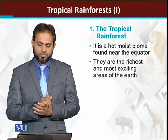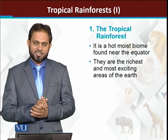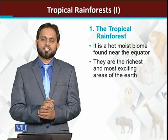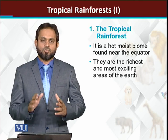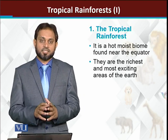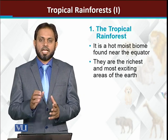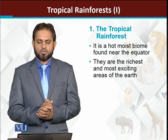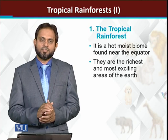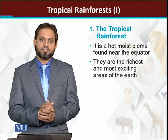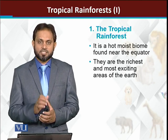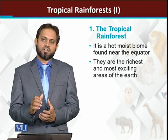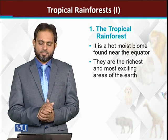First, the definition of tropical rainforest. Tropical rainforests are actually the forests which are present at the equator of Earth. They have a very moist environment — very ideal conditions for the growth of plants.